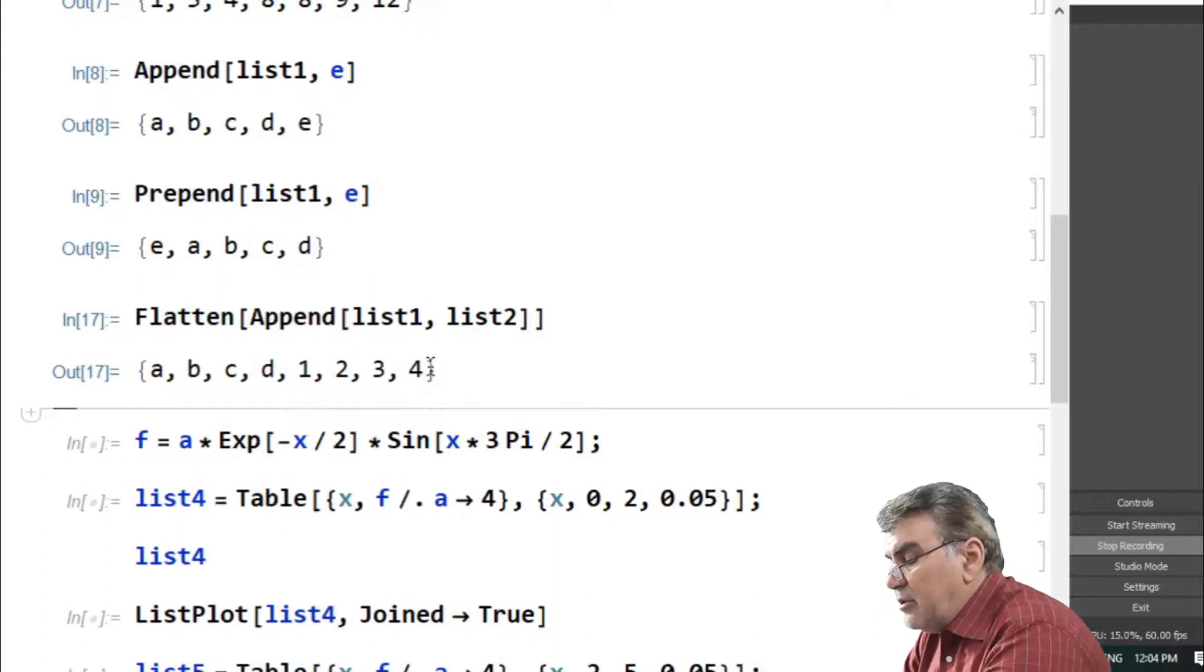For example, consider function f is a function of variable x. This is obviously a damped oscillating function with its maximum amplitude equal to a.